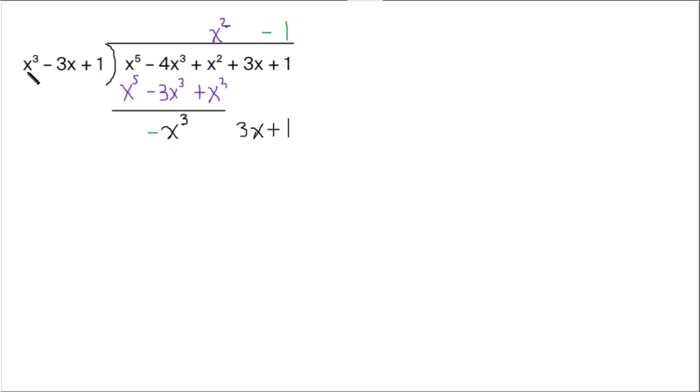So now we multiply that negative 1 by this trinomial. So we get negative x cubed. Negative 1 times negative 3x is plus 3x. Notice these are the same.